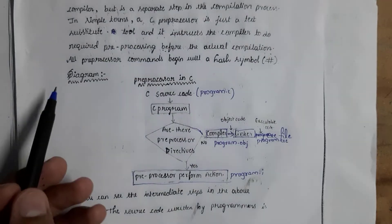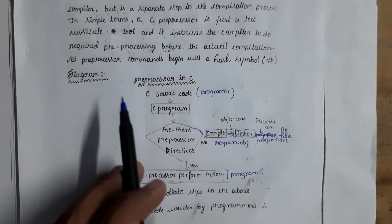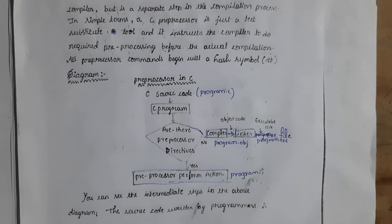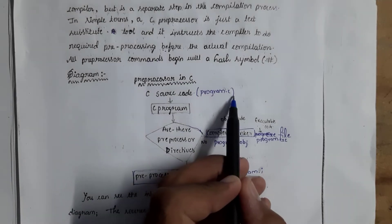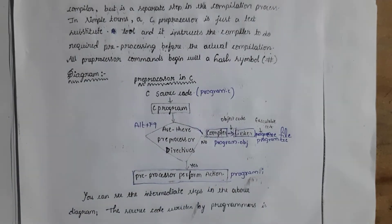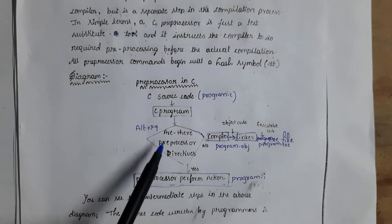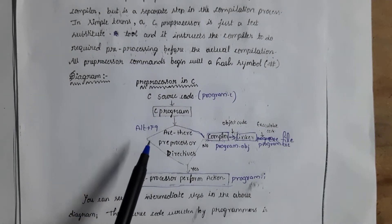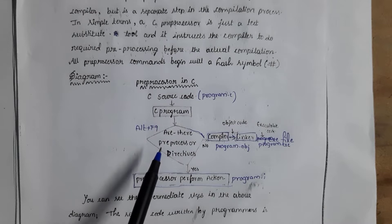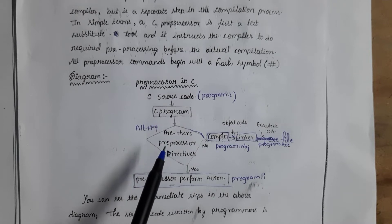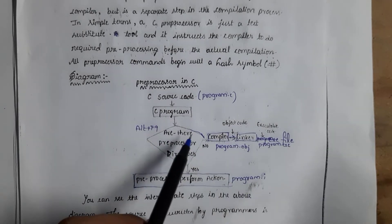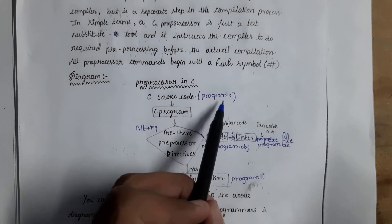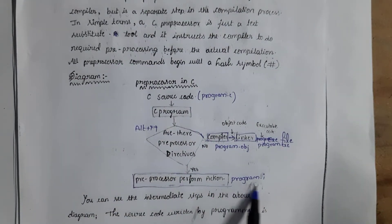This is a diagram of how the pre-processor works. Whatever program we write in C, we call it source code, and we save it with a .c extension — for example, program.c. Whenever you compile this program by pressing Alt+F9, before compiling, the compiler checks whether any pre-processor commands are present in the program, and then it performs the pre-processing task.